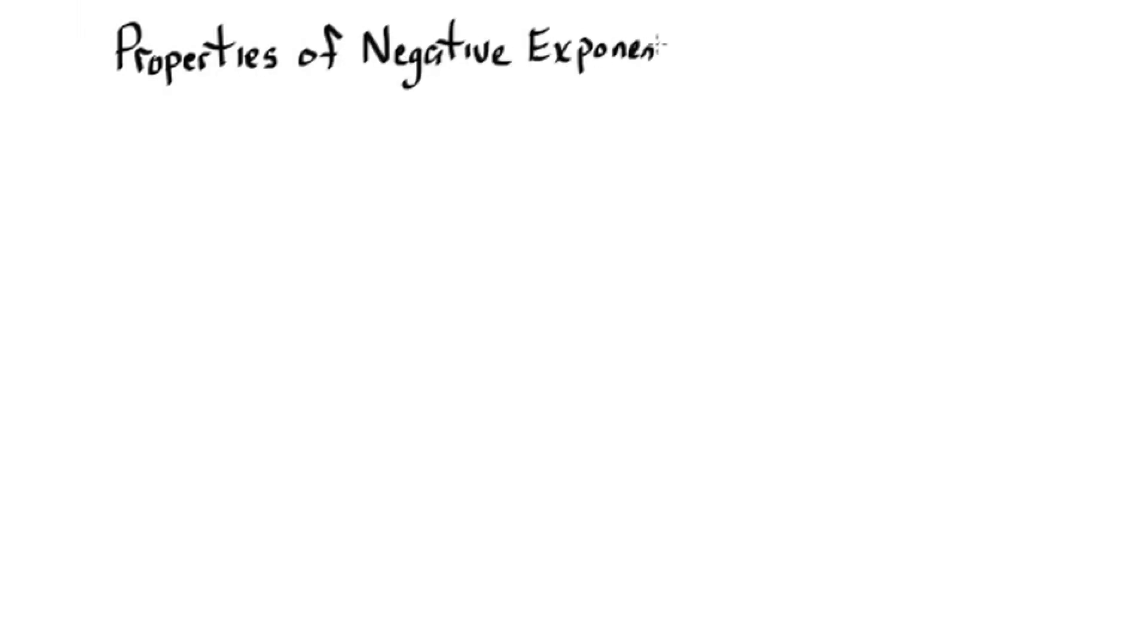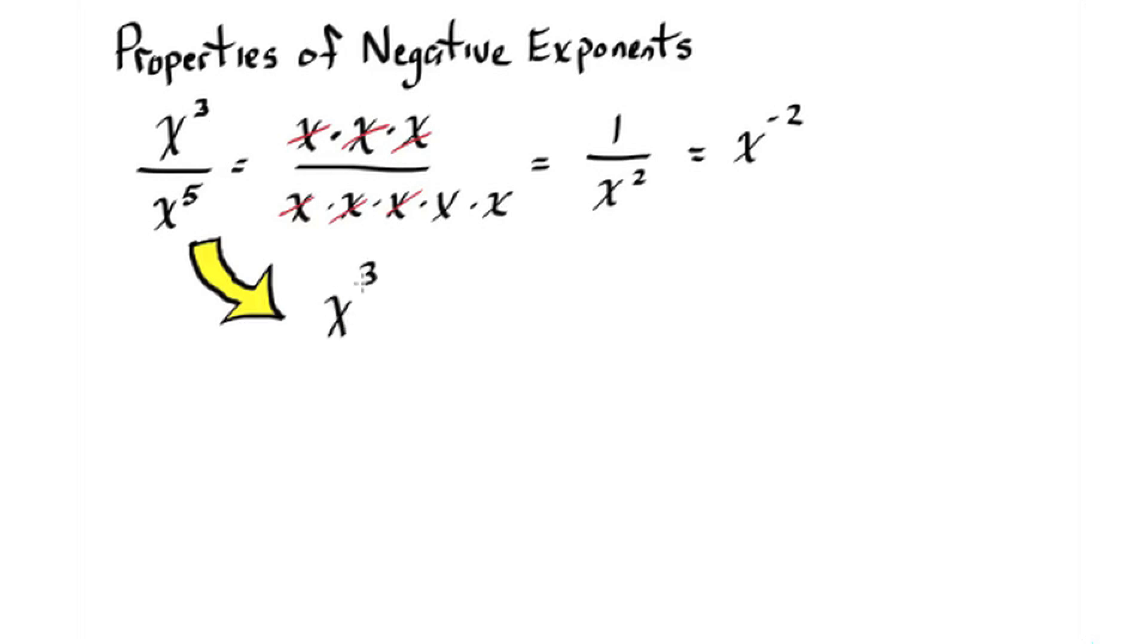Properties of negative exponents. x to the third over x to the fifth can be expanded to be written as such. So we can see we have 3 pairs of x's top and bottom that will eliminate leaving us with 1 over x squared. We can write this as x to the negative 2.